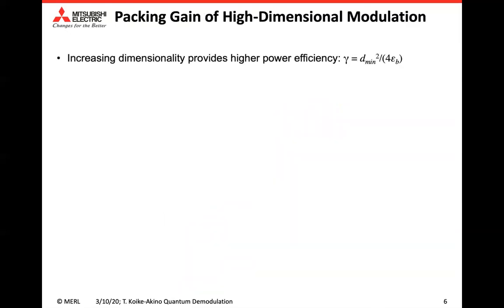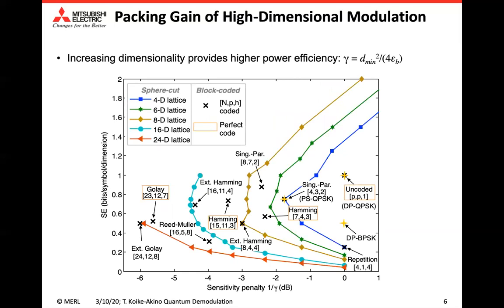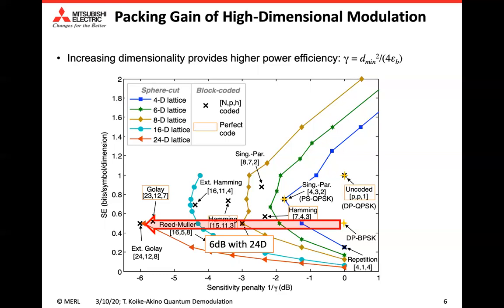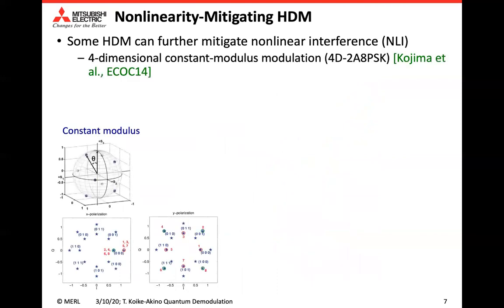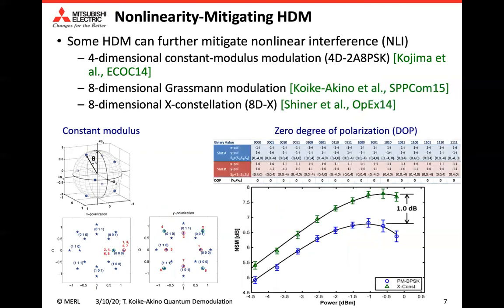Let's see the gain of HDM in asymptotic sensitivity. The Y-axis is the differential spectral efficiency. Looking at BPSK, which is 1D, and then increasing the dimensionality to 4, 6, 8, 16, and 24 — we can achieve a significant gain in sensitivity, like 6 dB. Not only the packing gain, HDM has another benefit for nonlinear fiber. Some HDM was designed to reduce nonlinear interference, like constant modulus modulations, Glassman code, and X constellations.